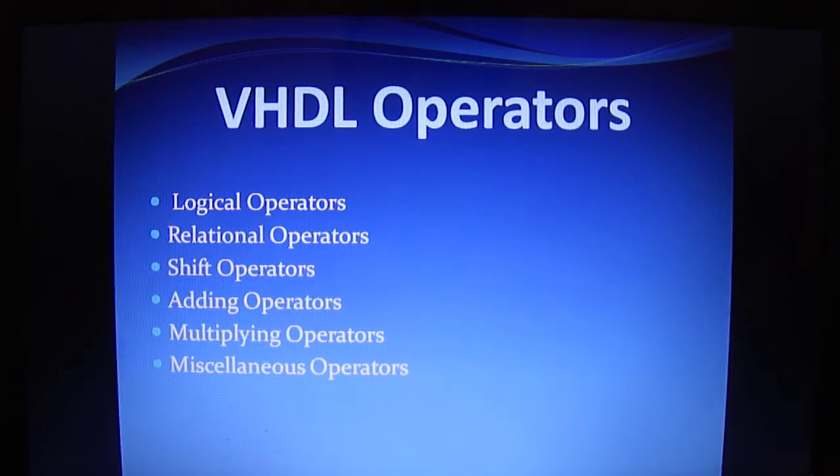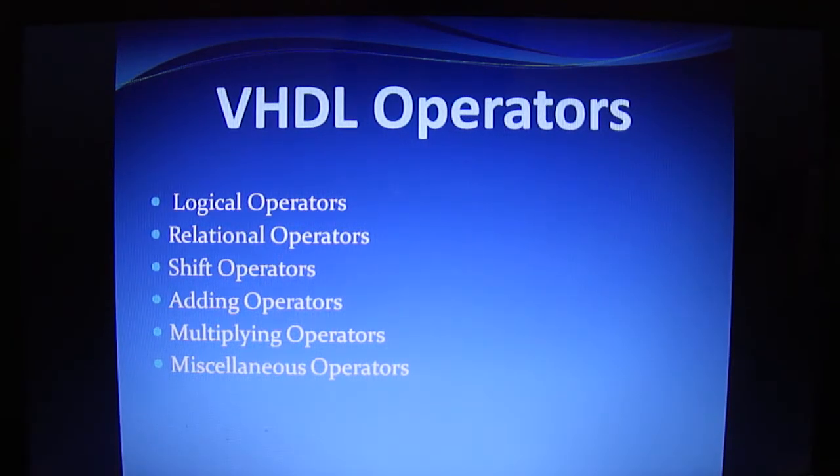VHDL have six different types of operators, six different categories. The first one is logical operators, relational operators, shift operators, adding operators, multiplying operators and miscellaneous operators.